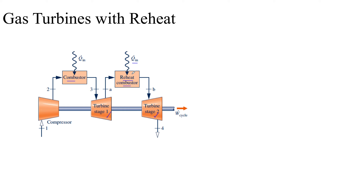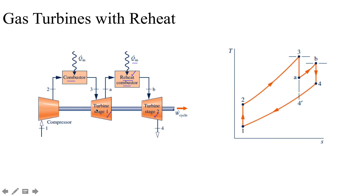This is achieved by the addition of the reheat combustion chamber between the two turbine stages. Looking at the TS diagram, when we get to state three — the turbine inlet — the gas expands within the first-stage turbine. At the turbine exit, it enters the reheat combustion chamber, where it still has excess air. There it mixes with more fuel, gets heated up, and reaches point B — the reheat combustion exit or second-stage turbine inlet. Then the gas expands within turbine stage two from state B to state four.